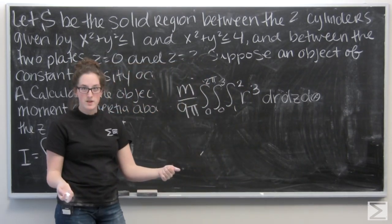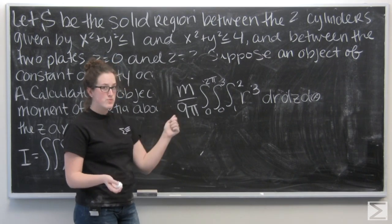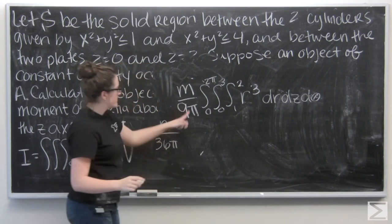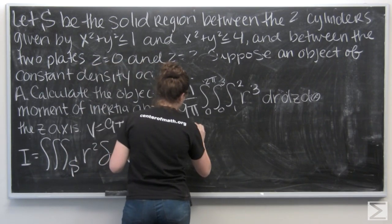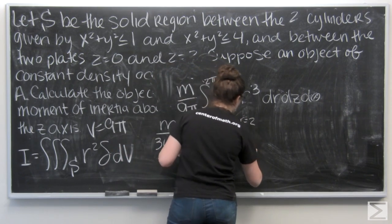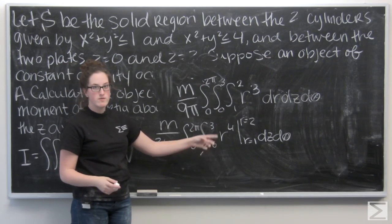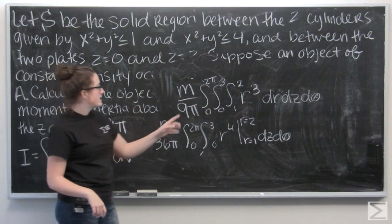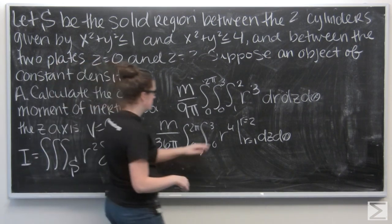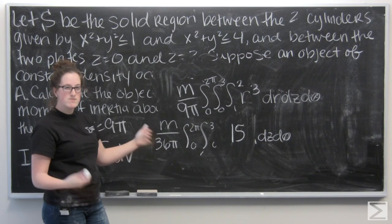Let's integrate with respect to r. The integral of r³ is (1/4)r⁴. I'll pull that 1/4 out — 4 times 9 is 36. Evaluating r⁴ from r = 1 to r = 2: 2⁴ = 16 minus 1⁴ = 1, giving 15. I'll pull the 15 out since it's just a constant.